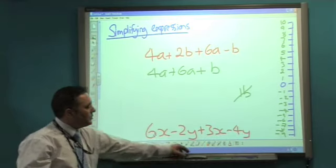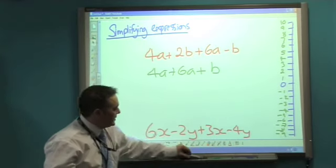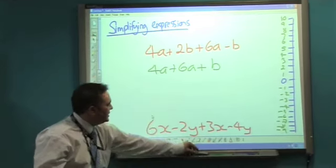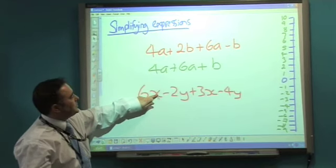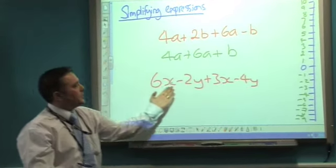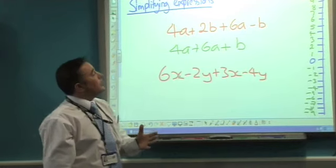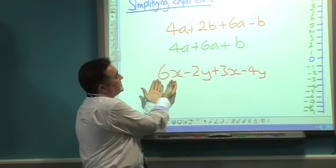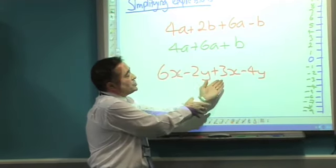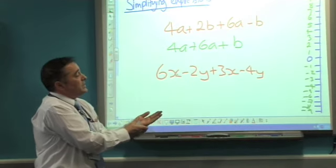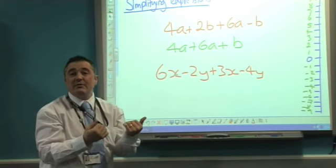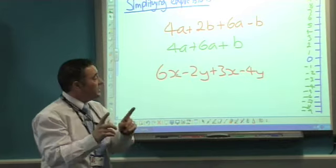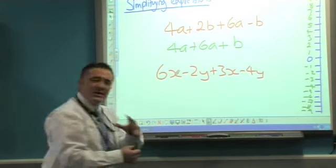When it gets to something a little more complicated, let's just get rid of that for a minute, when you need an actual strategy, something like this. And you might immediately try and start saying, well, I've got 6x minus 2y plus 3x minus 4y. You don't want to do that. What you need to do is have a little strategy in mind.